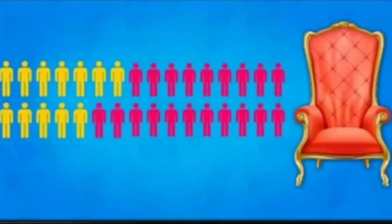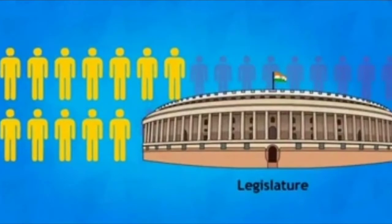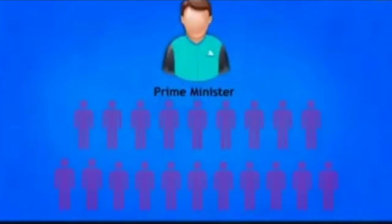Sometimes when no party gets a clear majority, some parties come together to form a majority and establish the government. This kind of government is known as a coalition government. In this way, candidates directly elected by the people become members of the legislature, and the party in the majority gets a chance to form the government. The leader of the majority party becomes the Prime Minister.